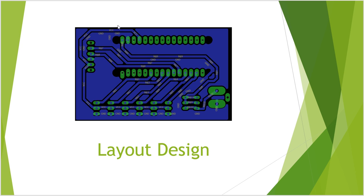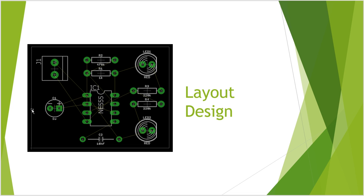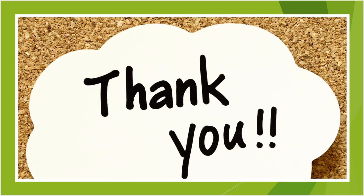So to summarize, there are two parts: the schematic, which looks like this, and the layout designing — which first shows the ratsnest lines and then, once you complete all the traces, looks like the final routed PCB. I think that was quite a good introduction. I will see you in the next tutorial. Please subscribe to our channel Free Knowledge, and thank you for watching.